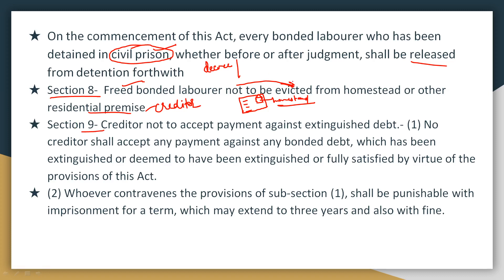Section 9 states that a creditor must not accept payment against an extinguished debt. Since after this Act all liabilities of the bonded laborer are extinguished, a creditor cannot accept any payment. This provision specifically protects illiterate bonded laborers who may not know their obligations have been discharged. If a creditor accepts such payment, the punishment under Section 9 is imprisonment of up to 3 years, along with a fine.